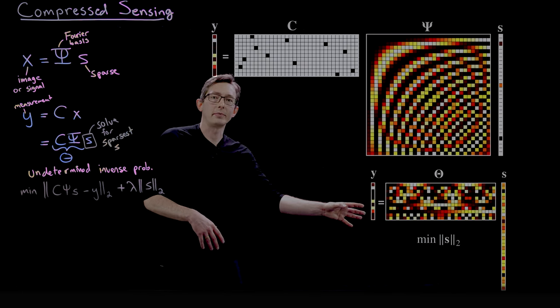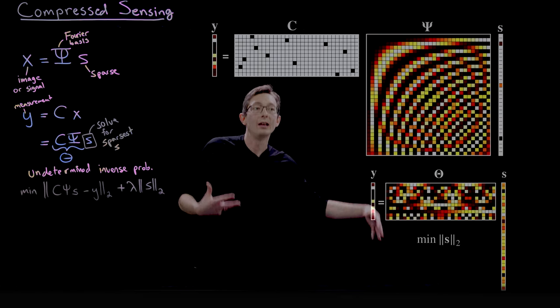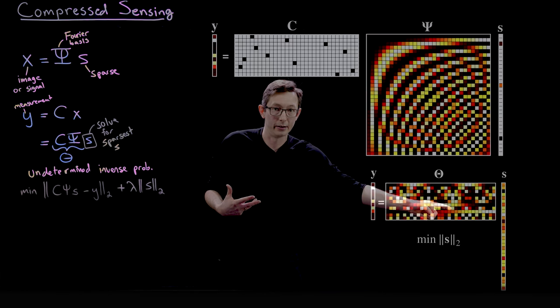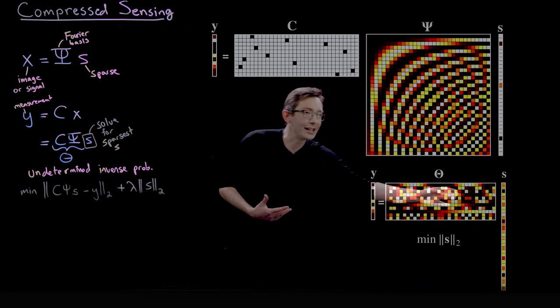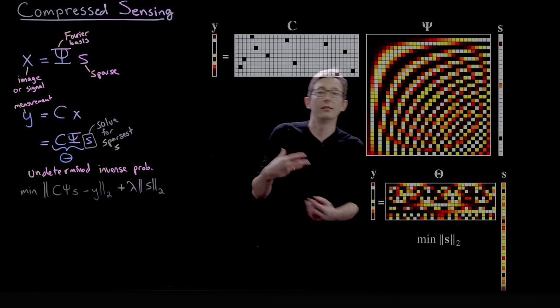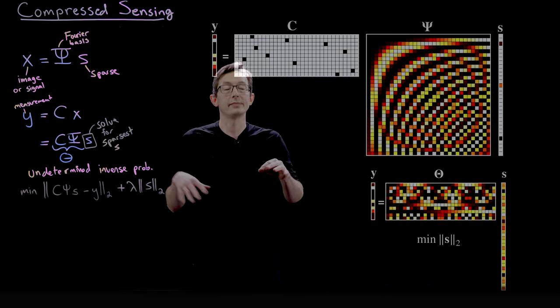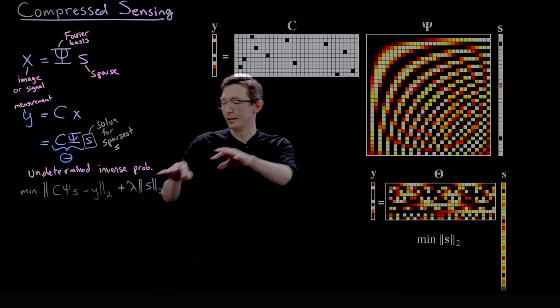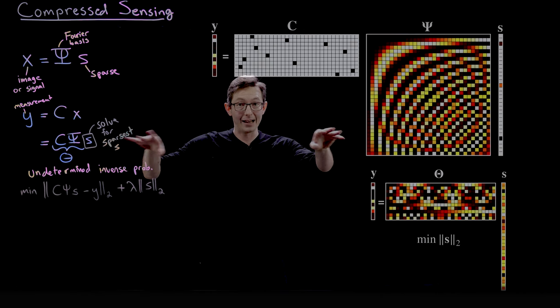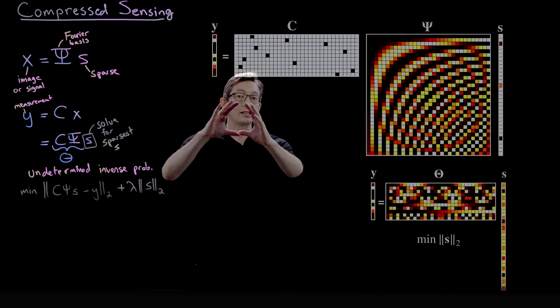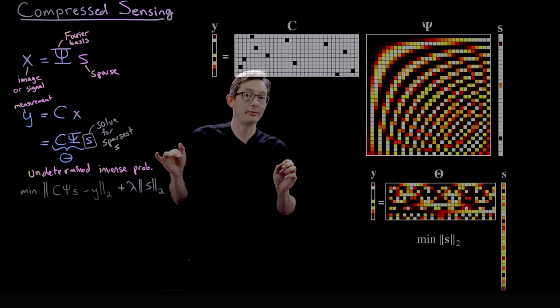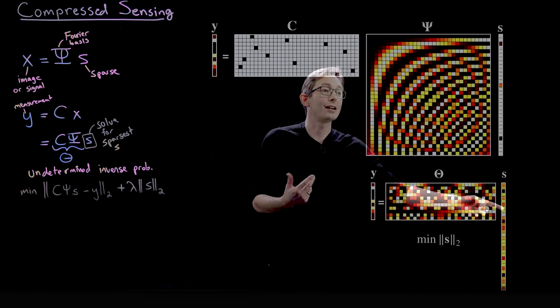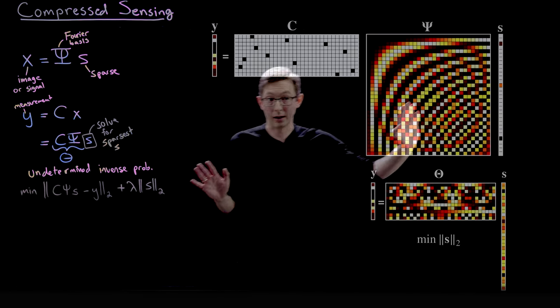But when you solve for the minimum two norm system, this is what you get. So this is the s that has the minimum two norm that satisfies this system of equations, C times psi is theta here. And notice that s is kind of dense. It has a little bit of energy in all of its entries. And that's what this two norm does. The two norm spreads out the error in the entries of s so that you have the smallest radius possible, but every term is active. And so this s most certainly does satisfy this system of equations, but it's not at all sparse. It's not the solution that we want.